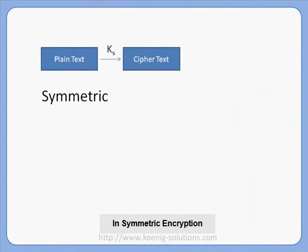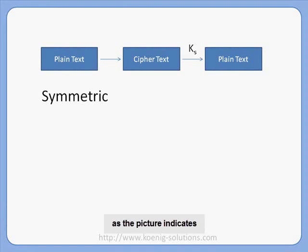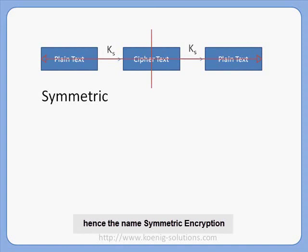This is symmetric encryption. In symmetric encryption, the key used to encrypt and decrypt the information is the same. As the picture depicts, if we divide from the middle, both halves are the same — hence the name symmetric encryption.